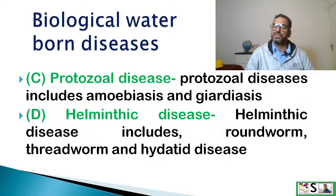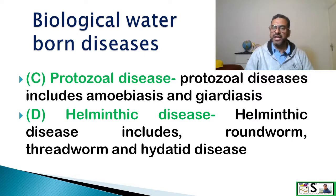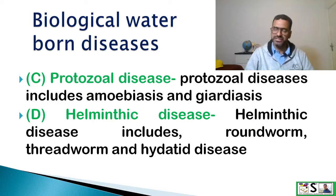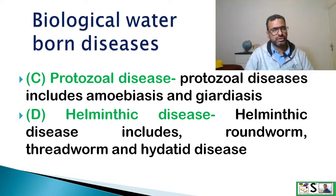Next is protozoal diseases. Protozoal diseases include amoebiasis and giardiasis. Helminthic diseases include roundworm, threadworm, hydatid disease, etc. We have already uploaded videos on these worms on this YouTube channel — you can watch those videos.